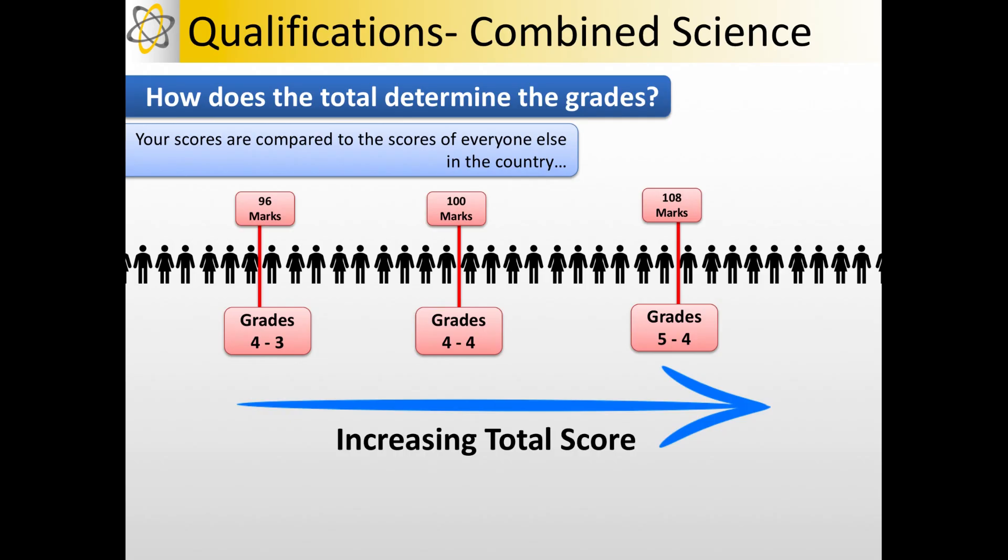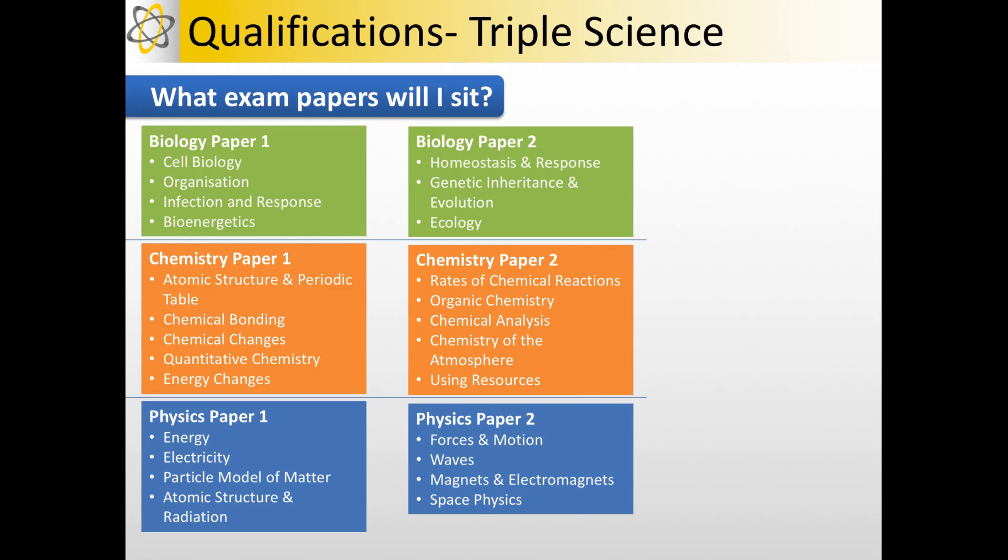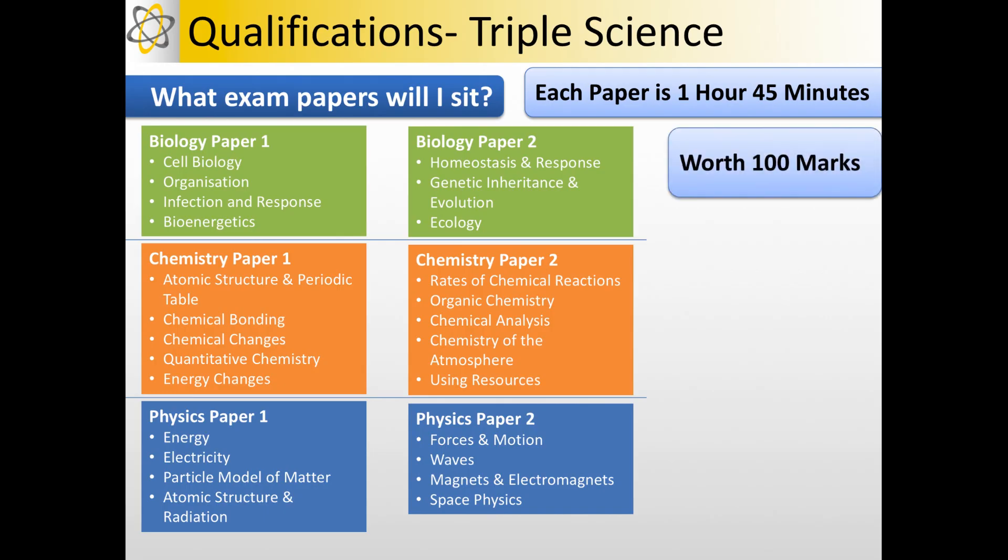The same process is used for triple science but they do that for each individual science. So if you're doing triple the exam papers that you're going to sit are two Biology, two Chemistry, two Physics, each exam is one hour 45 minutes in length and each paper is worth 100 marks.